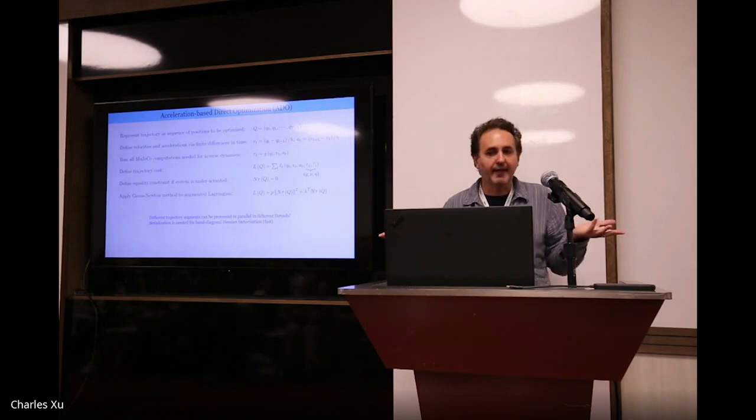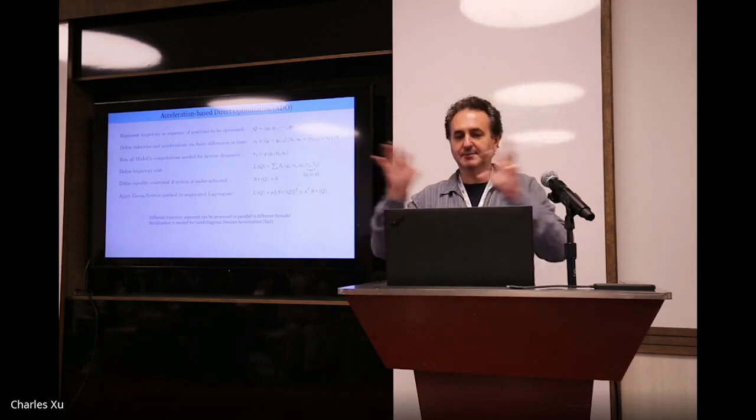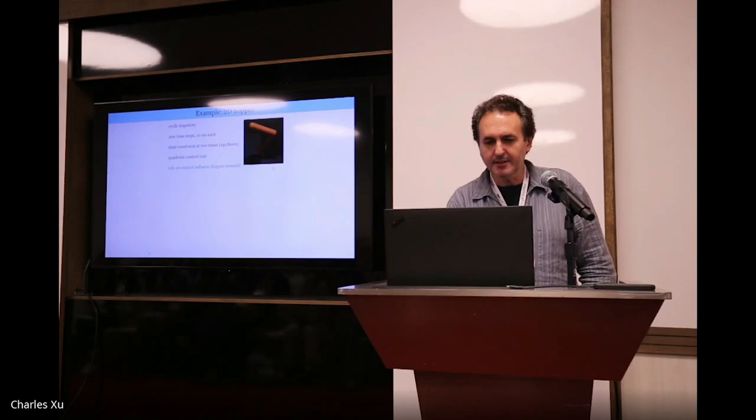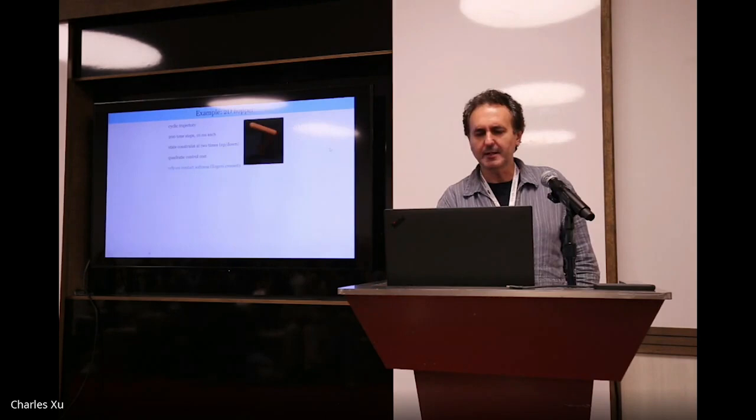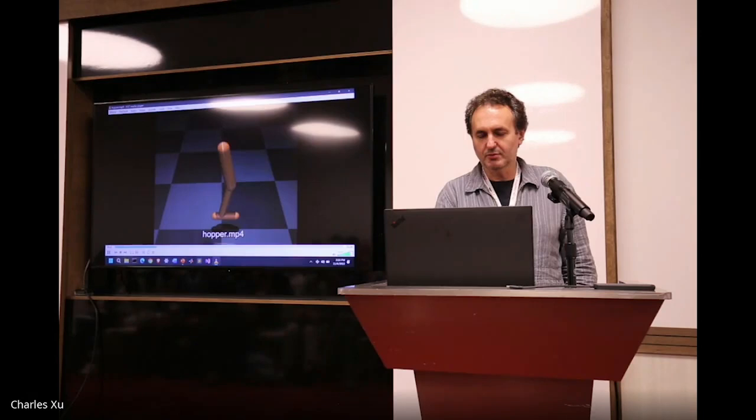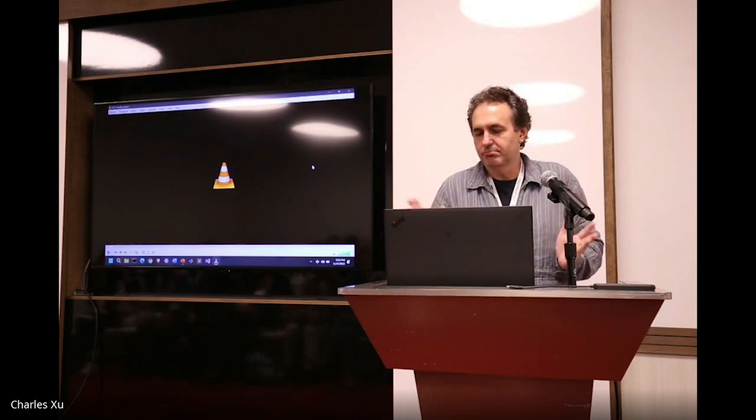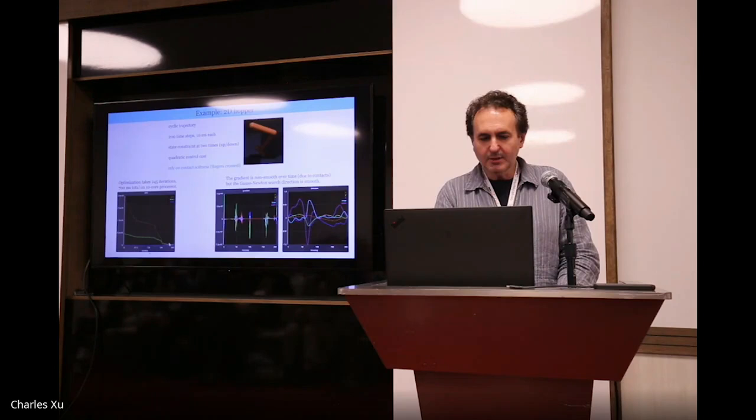This is important because if you want to do MPC and you have a 20-core processor, how do you use your 20 cores in MPC? It's really annoying. You do a forward pass, which is serial, then you do a backward pass, which is serial, and most of your processor is sitting there doing nothing unless you're sampling like DeepMind, which is a good idea. With this, you can actually split the trajectory in multiple chunks. Here's an example. We're going to optimize a cyclic trajectory, which we can do just by saying that the last step is equal to the first step. 200 time steps. We're just going to rely on the soft contacts of Mujoco and see what happens.